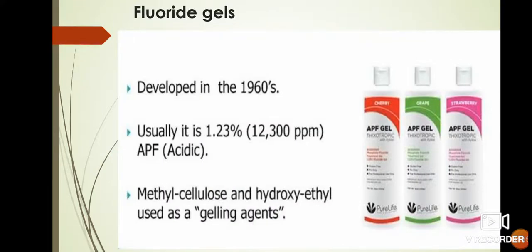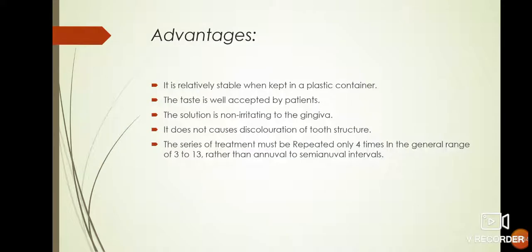Fluoride gels: it was developed in the 1960s. It is usually in 1.23% concentration. Methylcellulose or hydroxyethyl is used as a gelling agent. Advantages: it is relatively stable when kept in a plastic container, the taste is well accepted by the patients, the solution is non-irritating to the gingiva, it does not cause discoloration of the tooth structure. The series of treatment must be repeated only 4 times in the age range of 3 to 13 rather than at annual to semi-annual intervals.